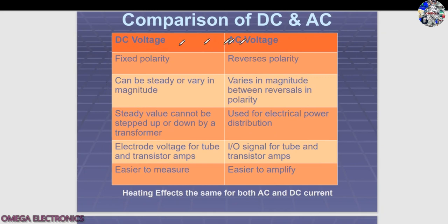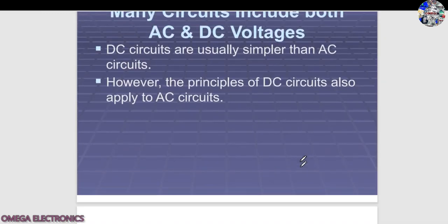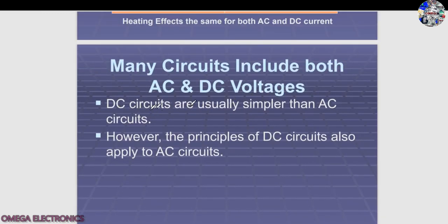Comparing AC and DC: DC has fixed polarity, charge can be stored, and its value can be constant or vary in magnitude. AC varies in magnitude and reverses polarity. DC value cannot be stepped up or down by a transformer. AC is used for electrical power distribution, and for tube and transistor amplifier input/output signals. It is easier to measure and amplify. Heating effects are the same for both AC and DC. Many circuits include both AC and DC voltages; DC circuits are usually simpler, but DC principles also apply to AC circuits.